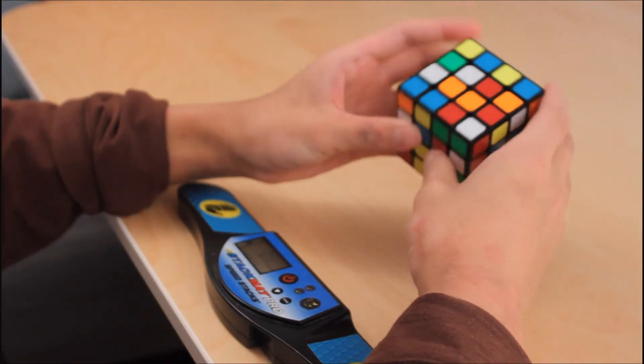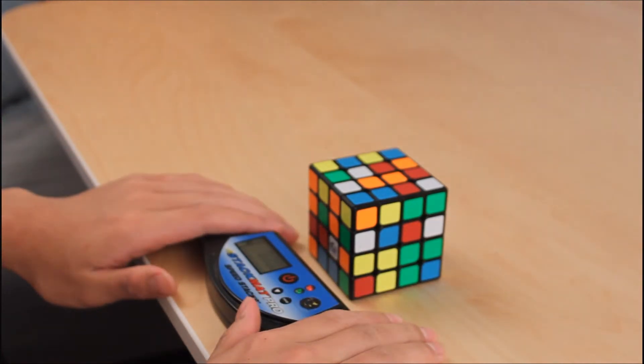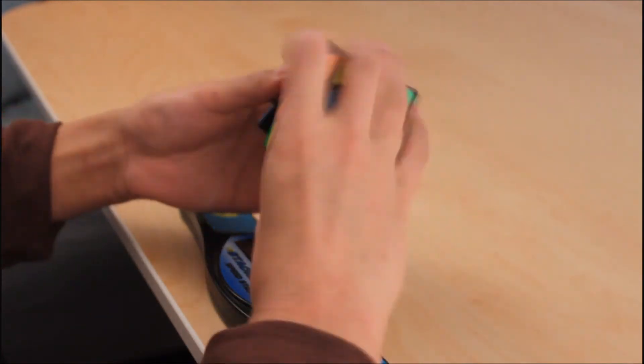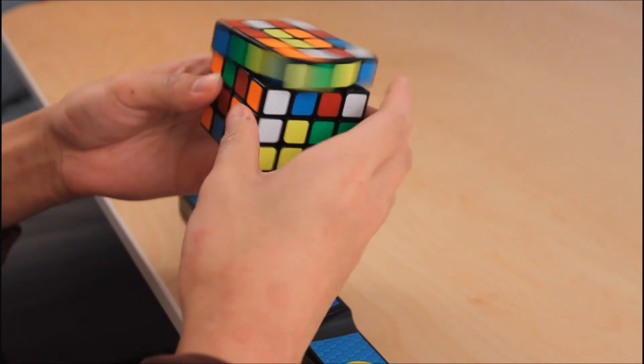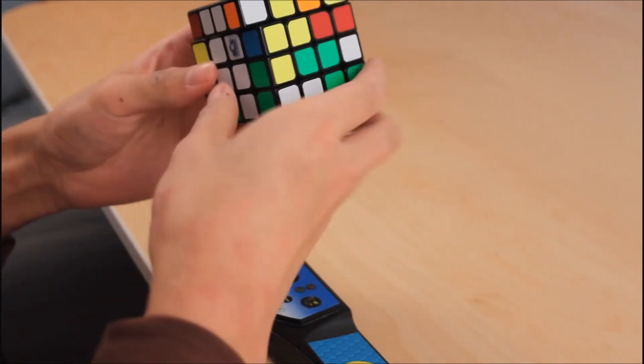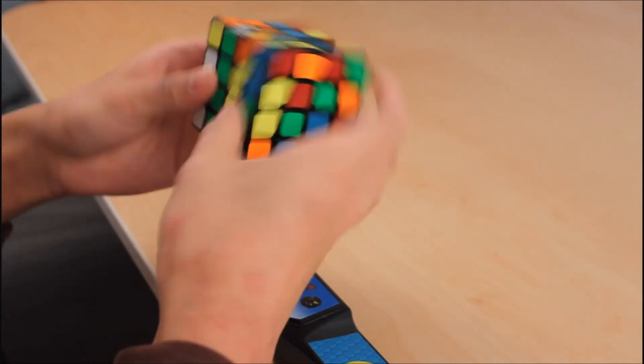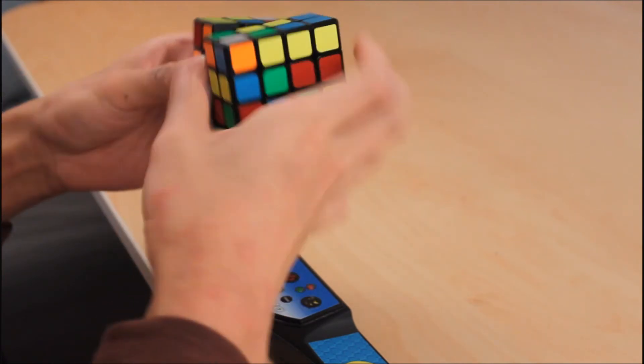OLL parity avoidance is an extremely hard method to actually get good at, but the result is well worth it in my opinion. To my knowledge, none of the world class solvers use this method in their solves, due to its complexity. With a long inspection time and a lot of thinking during the first portion of the solve. However, I do believe that just like CSP, this will eventually become the future of 4x4, and maybe some other big cubes.